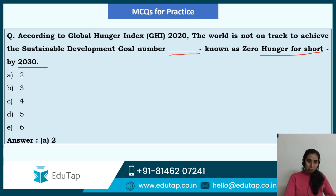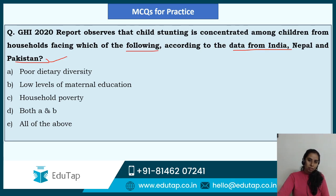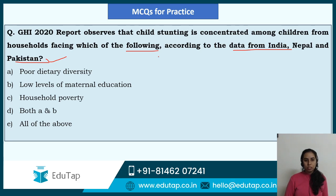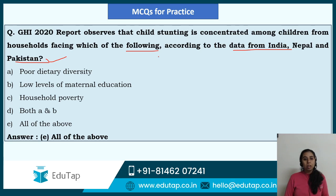Next question: GHI 2020 report observes that child stunting is concentrated among children from households facing which of the following, according to data from India, Nepal and Pakistan? Options: poor dietary diversity, low levels of maternal education, household poverty, both A and B, or all of the above. The answer is all of the above. Dietary diversity means variety in what you eat — not concentrated to rice or wheat. Low maternal education and household poverty are also key factors leading to stunting.